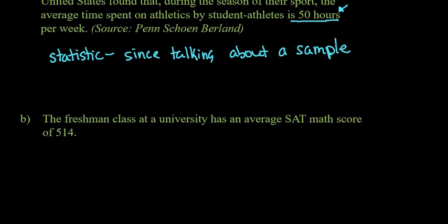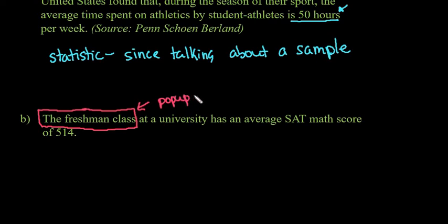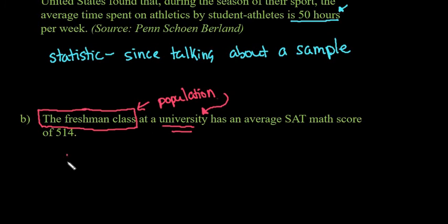For the second one, the freshman class at a university has an average SAT math score of 514. For this one, we are talking about the entire freshman class, so this would be the population of that class at this university. Since we're talking about that entire freshman class at this specific university, this would be a parameter, since it is describing a population.